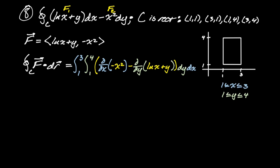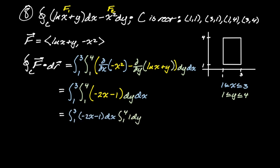The partial of −x² with respect to x is −2x, and the partial of ln(x + y) with respect to y is just 1. So the integrand becomes −2x − 1, which is much simpler. Since the inner bounds don't depend on x, we can separate this into two integrals — one in x and one in y — integrate each, apply the fundamental theorem to both, and simplify.